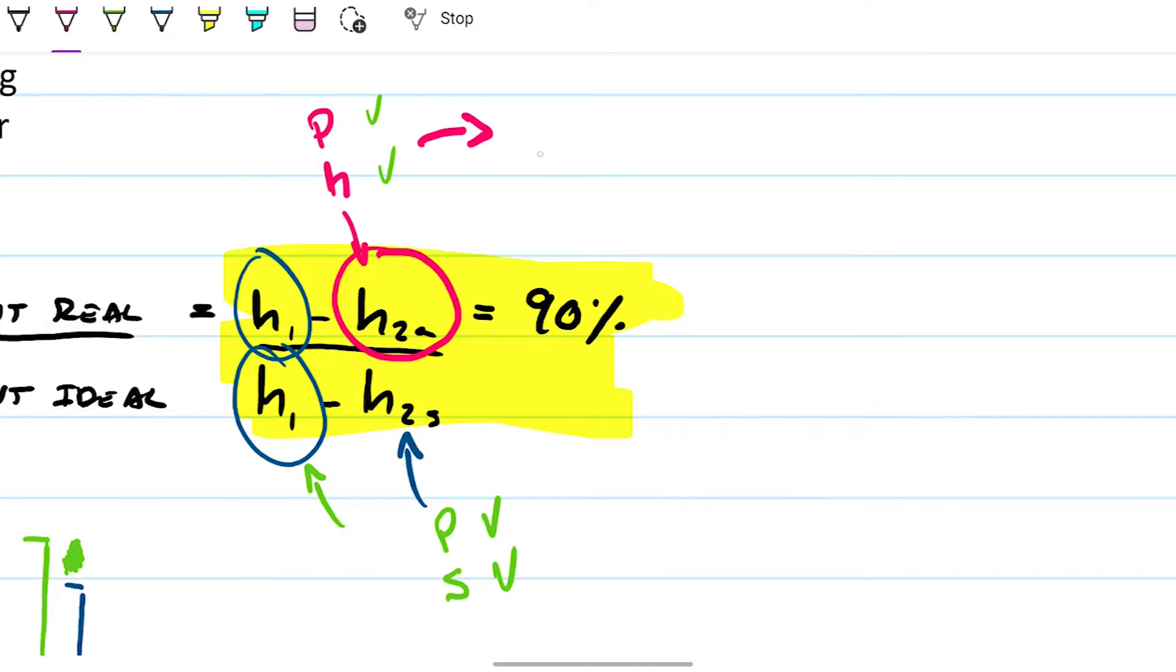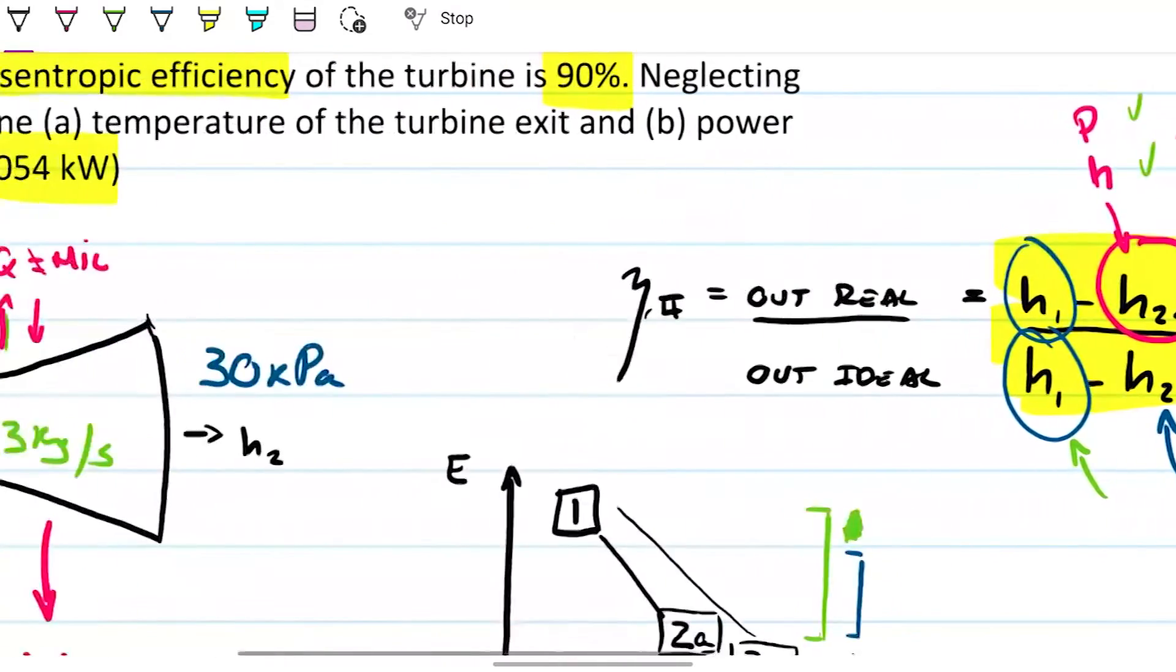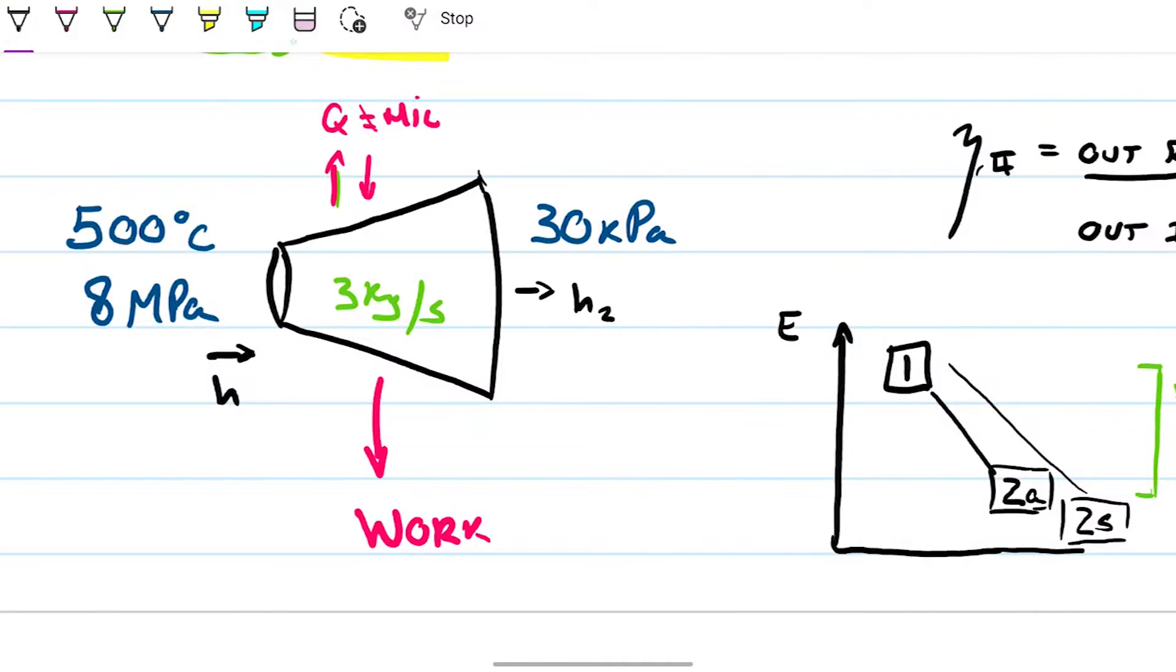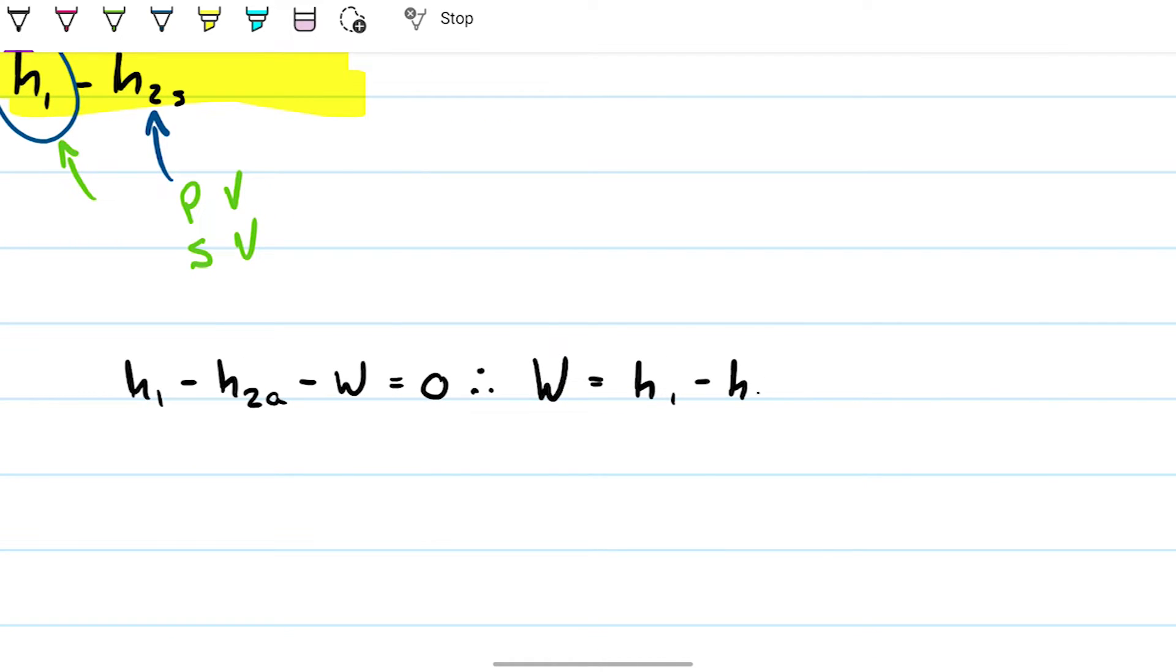And I can find with that any thermodynamic properties, including the temperature at which this is taking place, which is part A of the problem. And if I have that, the other thing I can do is this simple relationship. Let me just do this real quick. I'm going to do a little energy balance here on this turbine. We're going to notice that we have enthalpy going in, enthalpy going out, and work going out. So if we do this very quick energy balance, we're going to note that we have H1 minus H2 actual, minus work, and that has to be equal to zero. So therefore, if I want to find the work being outputted, that's going to be just H1 minus H2A. And if I want power, I simply multiply that by the mass flow rate that we have from the start, which is 3 kilograms per second.